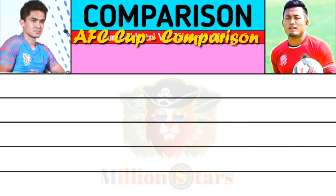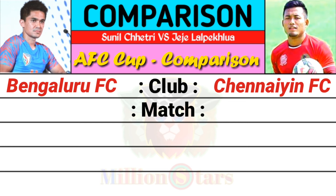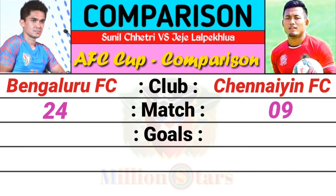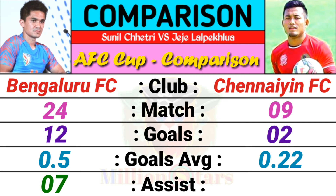AFC Cup comparison: Sunil Chhetri's club is Bengaluru FC, JJ's club is Jone FC. Sunil total matches played 24 and JJ total matches played 29. Total goals: Sunil scored 12 and JJ is 2. Goals average: Sunil's goals average is 0.5 and JJ's goals average is 0.22. Sunil assist is 7 and JJ assist is 0.